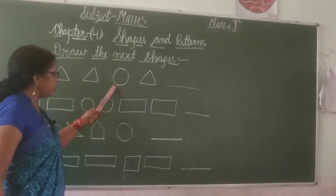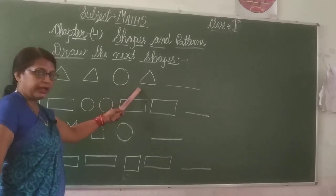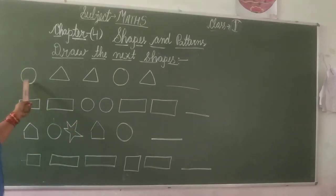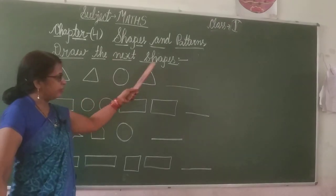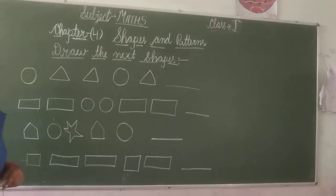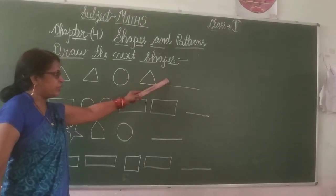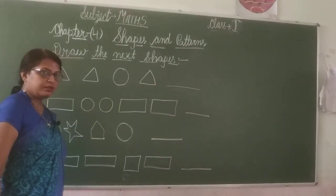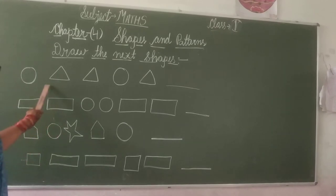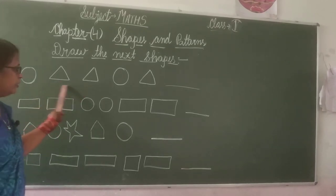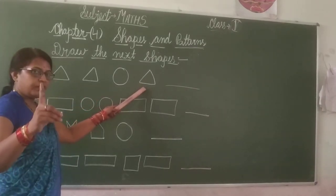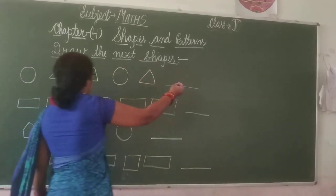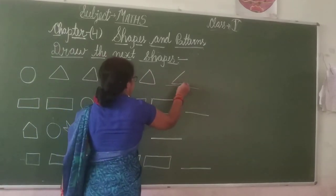And next circle, next triangle. Circle, triangle, triangle, circle, triangle. Next step, what is this? Which next shape is in the empty box? Here are two triangles and this one is triangle. Means the next shape is triangle.